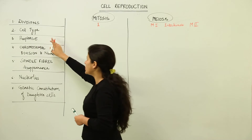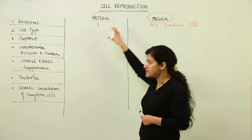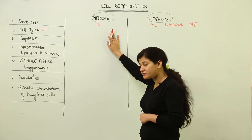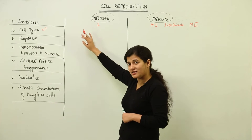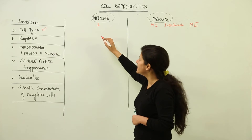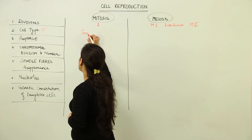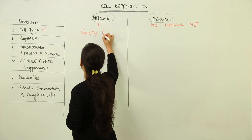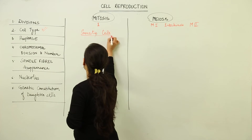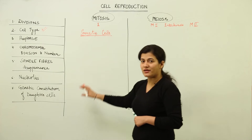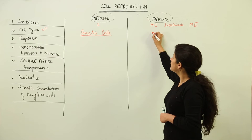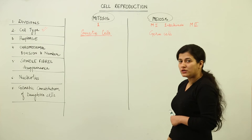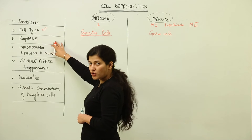The next thing we need to know is where mitosis takes place and where meiosis takes place — the type of cell involved. The cells which undergo mitosis are destined for repair and growth; they are the somatic cells. There are two types of cells: somatic cells and germ cells. Somatic cells are those present in the body that do not undergo gametogenesis. Meiosis takes place in germ cells, leading to the formation of gametes.